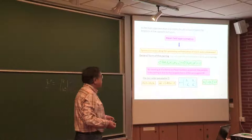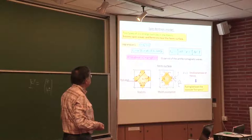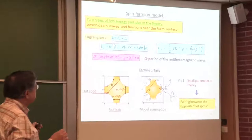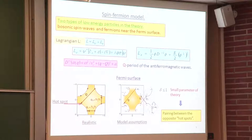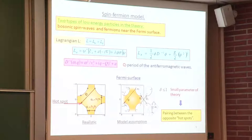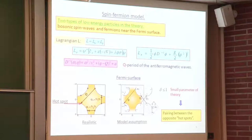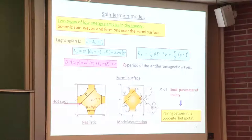This approximate SU symmetry is due to the fact that we are interested in the region near the hot spots. Otherwise this SU symmetry is not assumed in the original model—it appears just because we consider the most important region of the hot spots. In that small region the parts of the Fermi surface are almost flat, and we show that the small region is important. This SU symmetry, an approximate symmetry for regions near the hot spots, leads to the Lagrangian being almost invariant under those SU rotations.